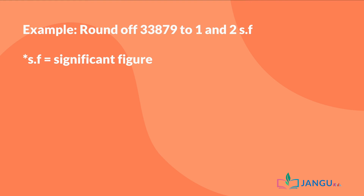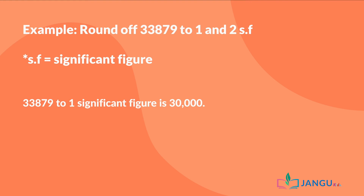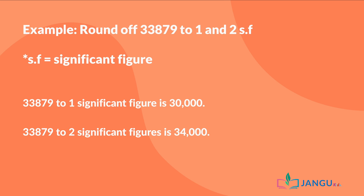Let's see what this means with this example. 33,879 to one significant figure is 30,000, because the first significant number is three. 33,879 to two significant figures is 34,000, because the second significant number is three, which is less than five, so we round it up to four.